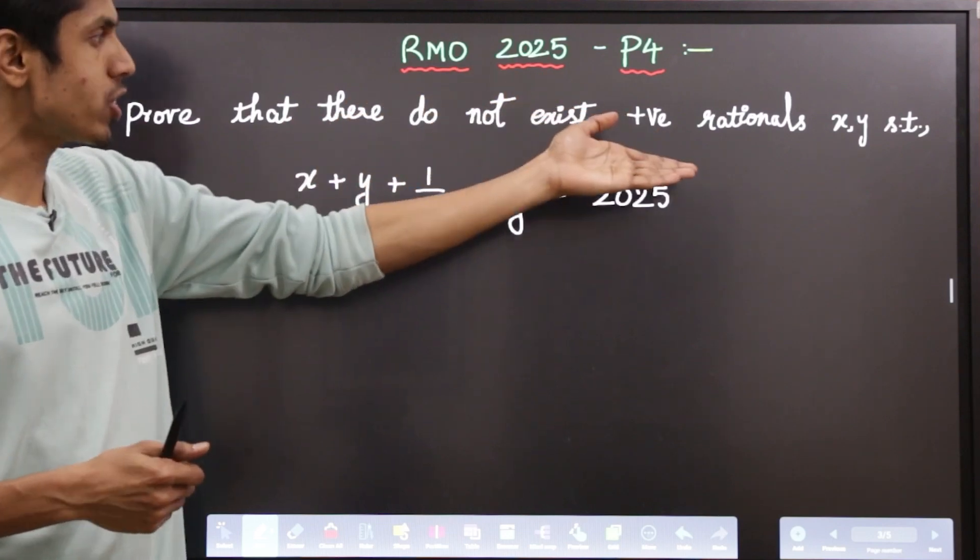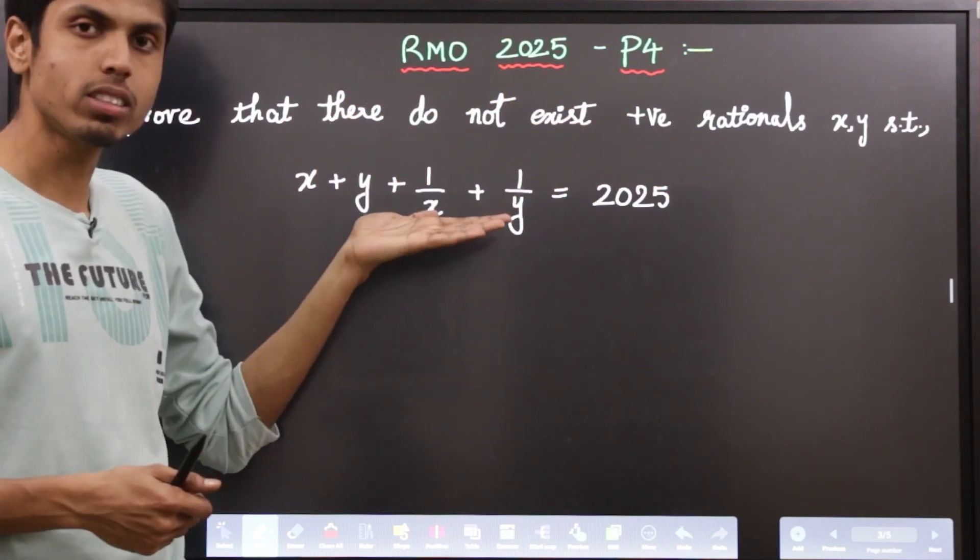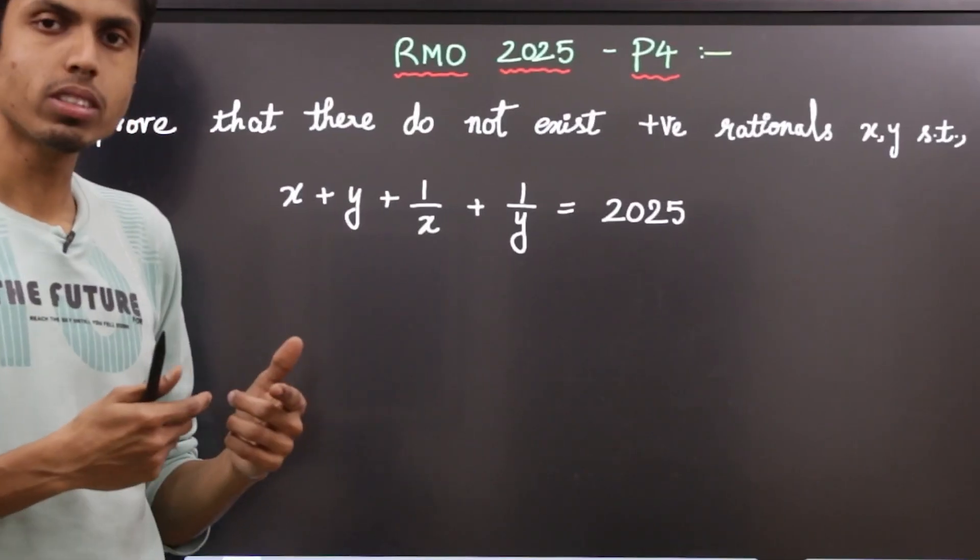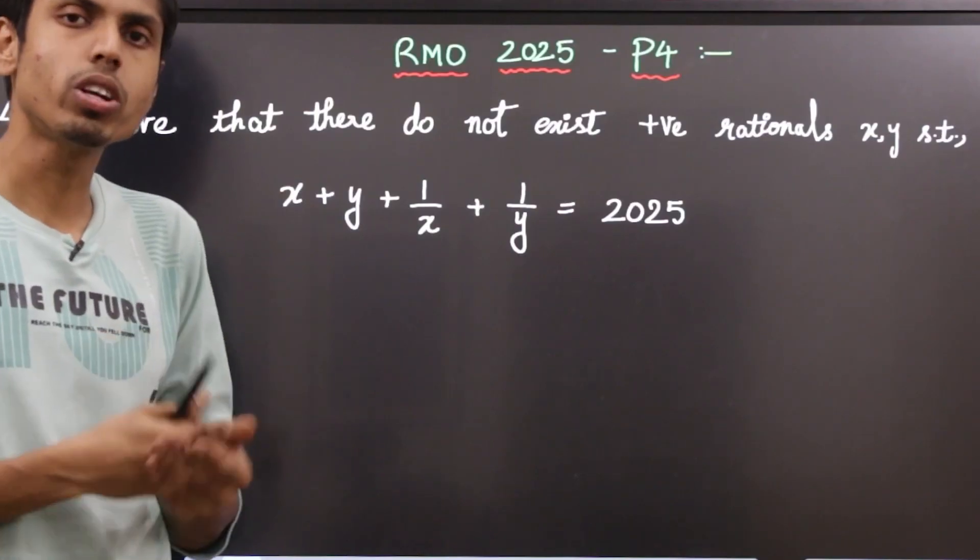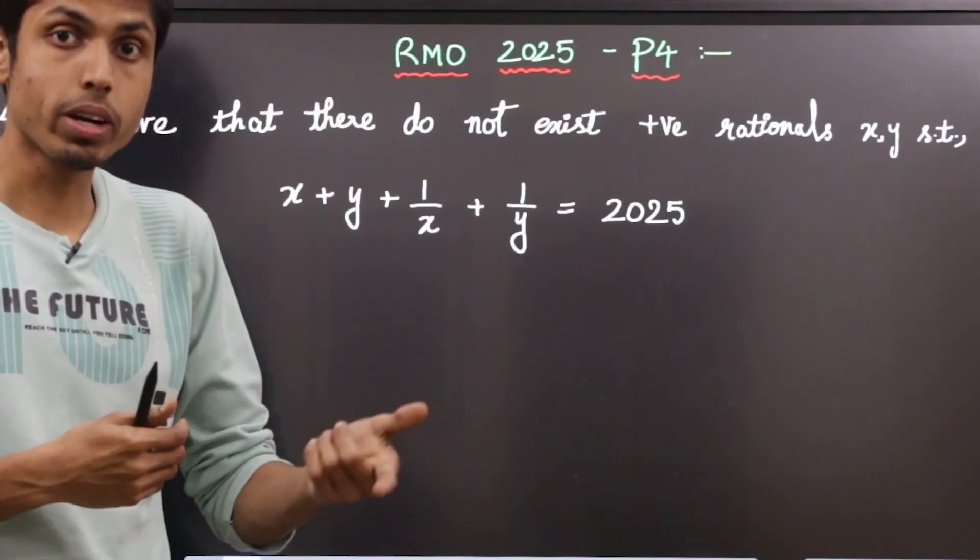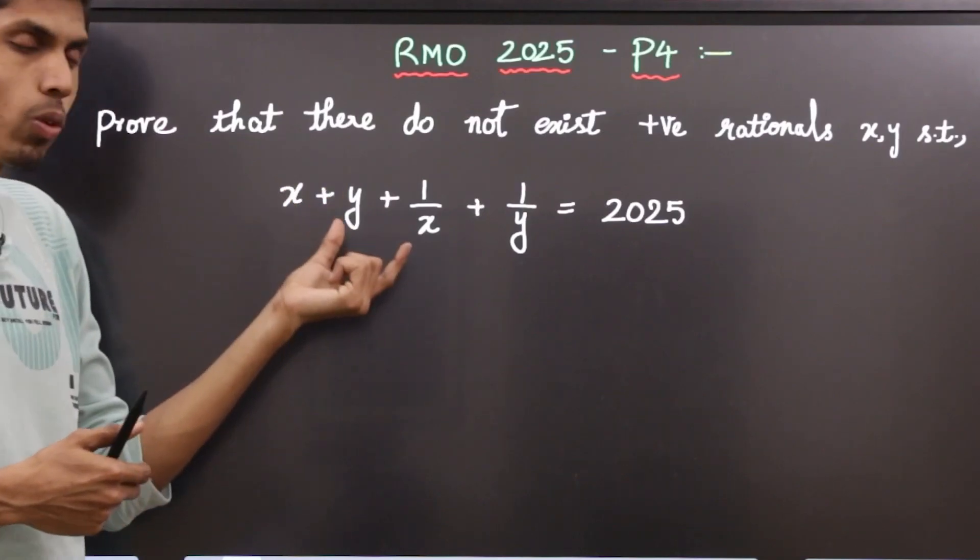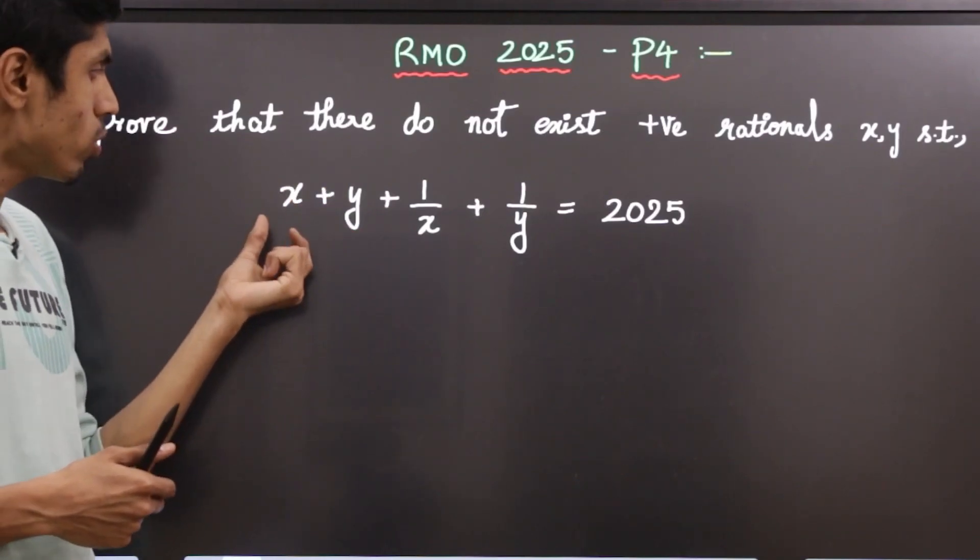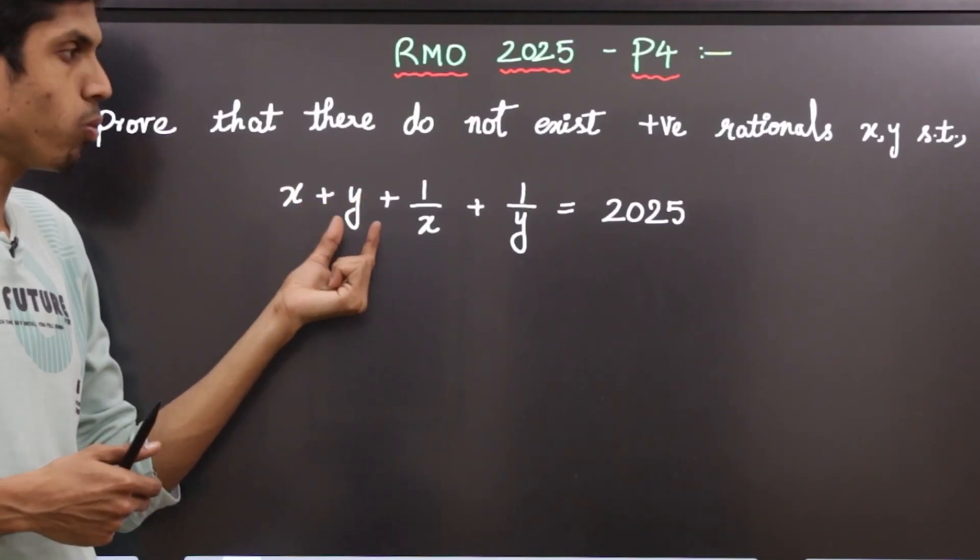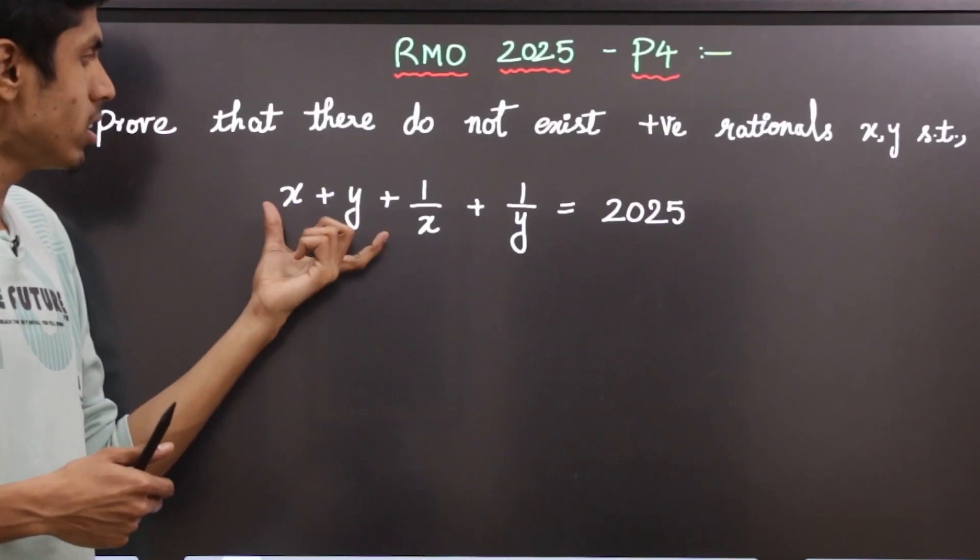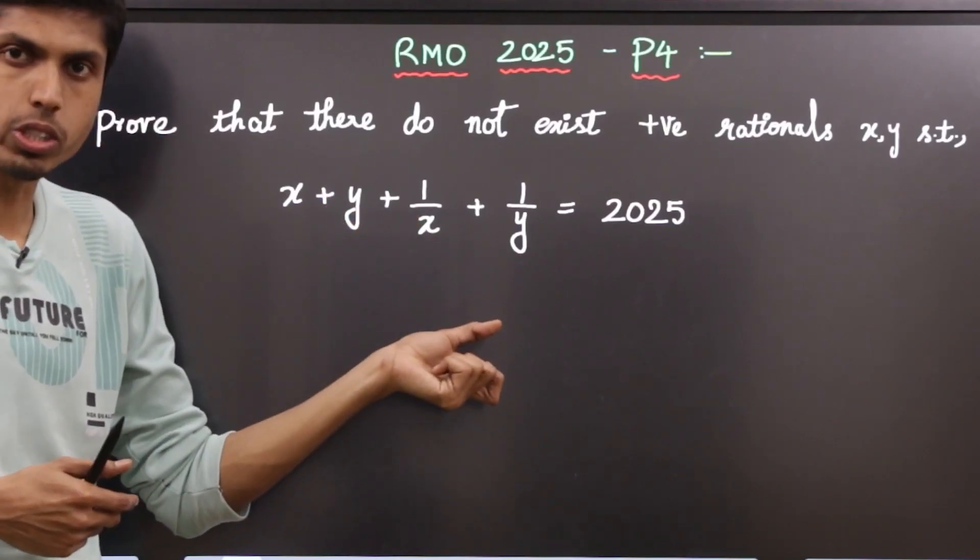Prove that no rational numbers x and y satisfy this equation. Rational numbers are just integers upon division of the form p by q. So you can convert x and y into the form p by q, and what turns out will be a Diophantine equation.